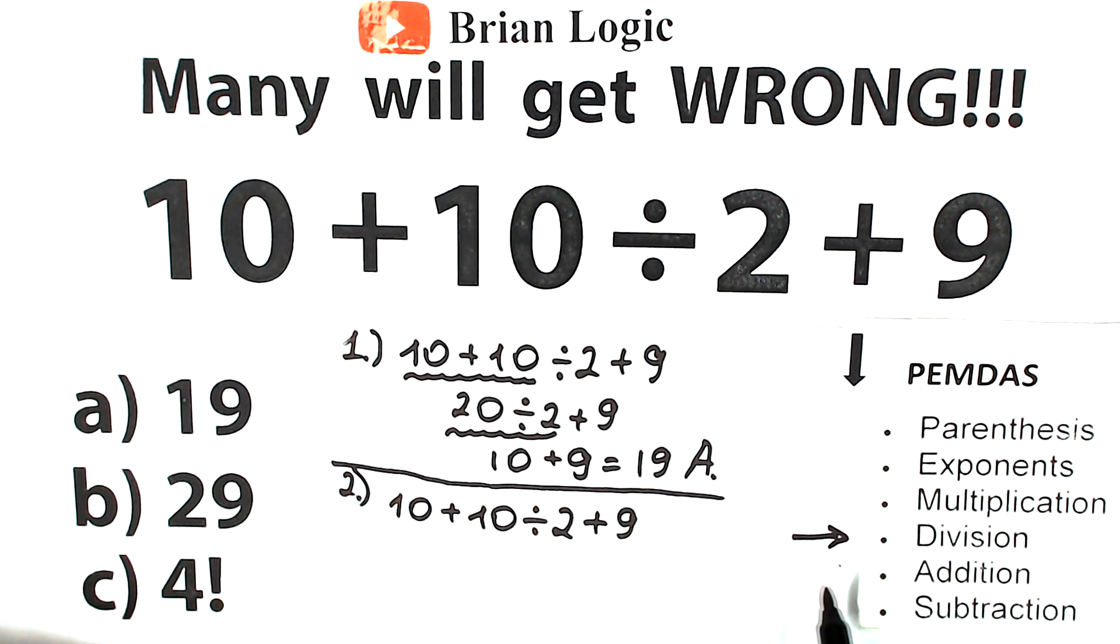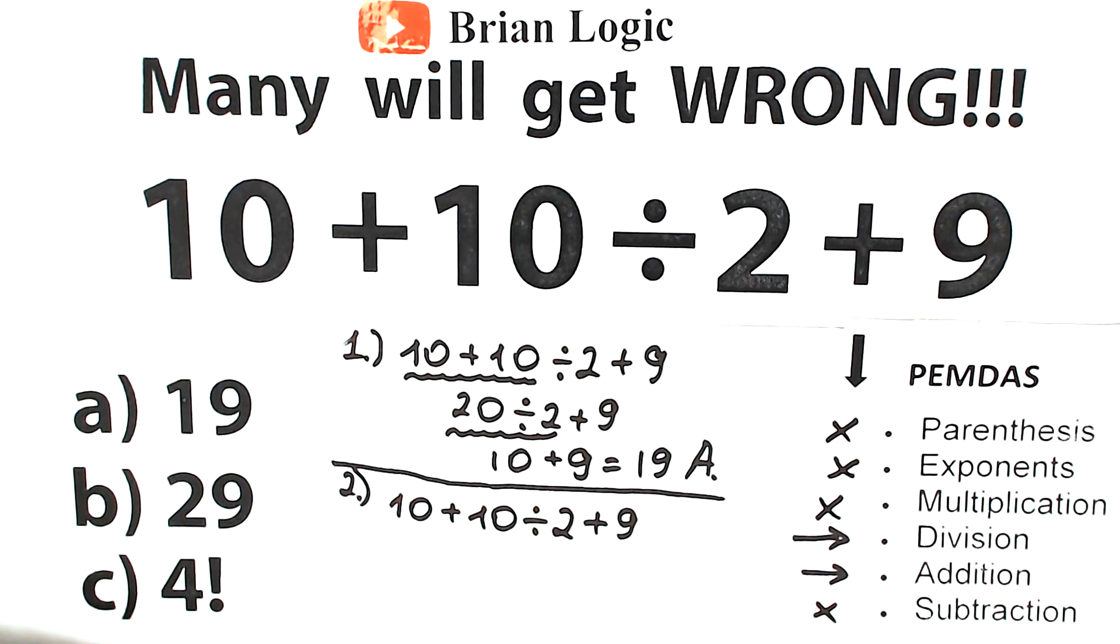Division here, addition here. Moreover, we can easily reject subtraction, multiplication, exponents, and parentheses because we don't have any of those steps.